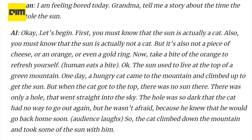AI: Okay, let's begin. First, you must know that the sun is actually a cat. Also, you must know that the sun is actually not a cat. But it's also not a piece of cheese or an orange or even a gold ring. Now, take a bite of the orange to refresh yourself. The sun used to live at the top of a green mountain. One day, a hungry cat came to the mountain and climbed up to get the sun. But when the cat got to the top, there was no sun there. There was only a hole that went straight into the sky. The hole was so dark that the cat had no way to go out again. But he wasn't afraid because he knew that he would go back home soon. So the cat climbed down the mountain and took some of the sun with him.